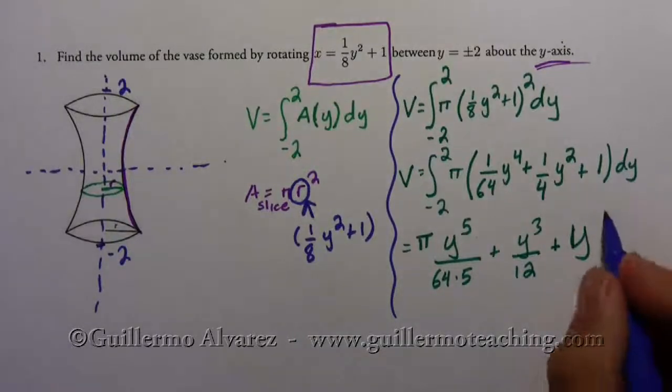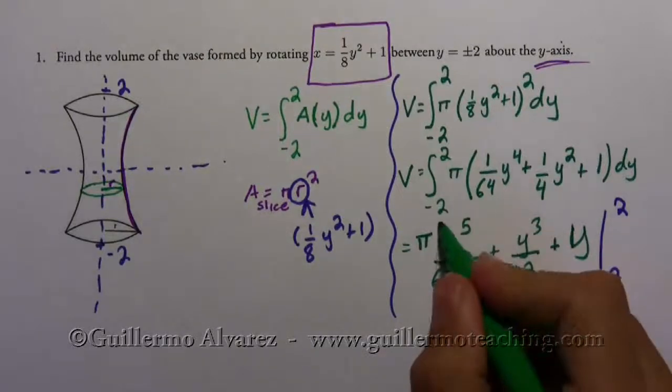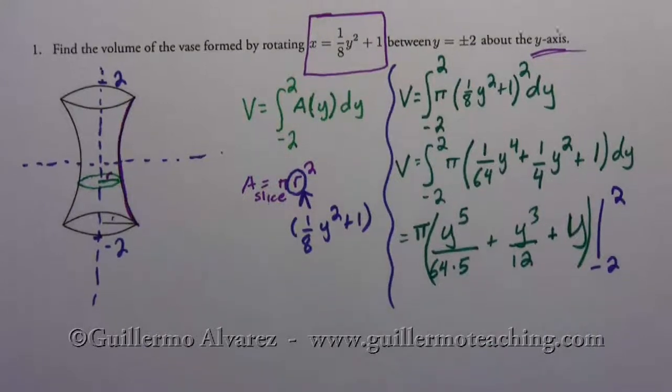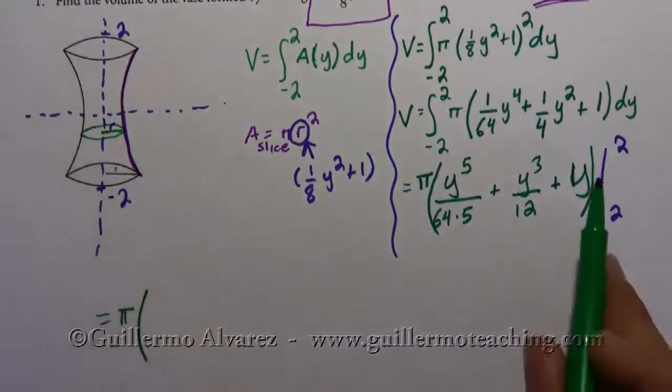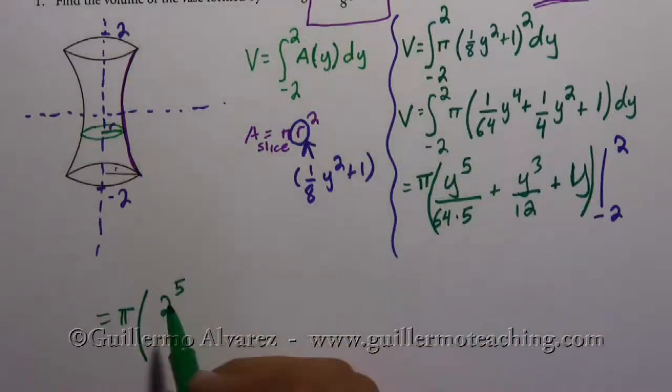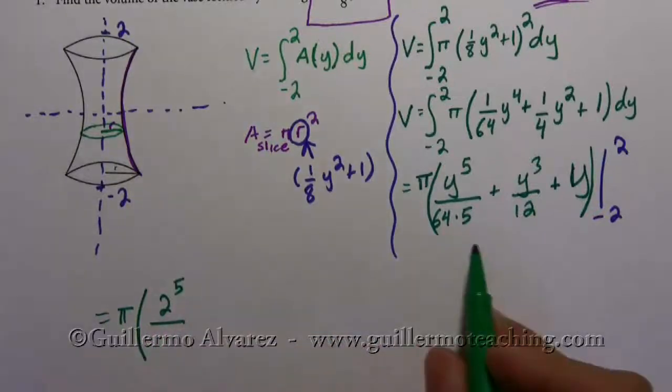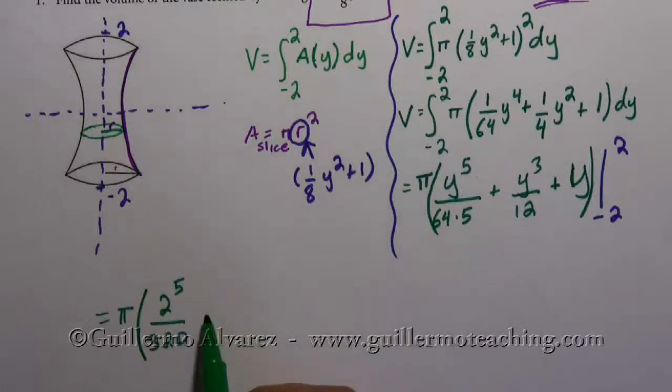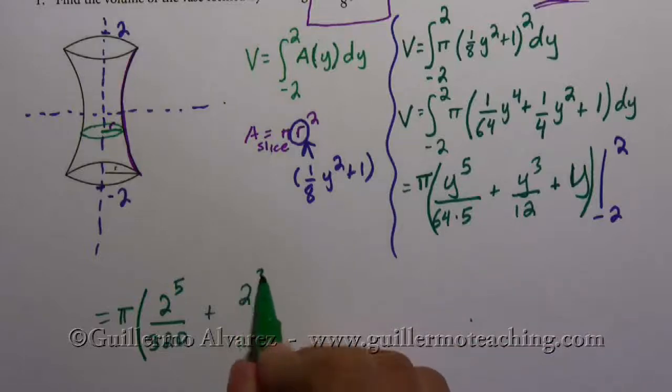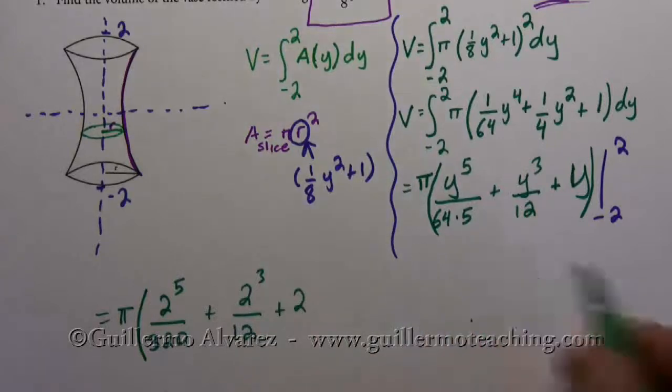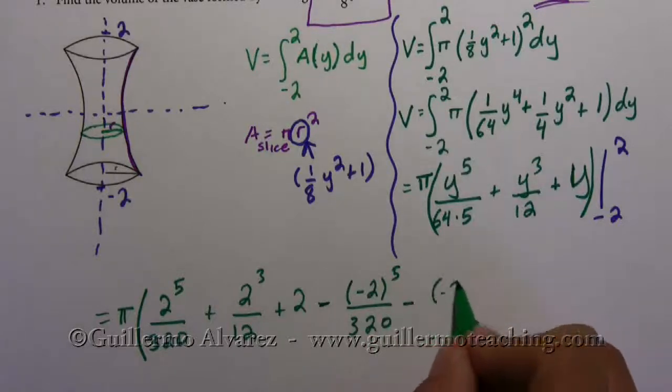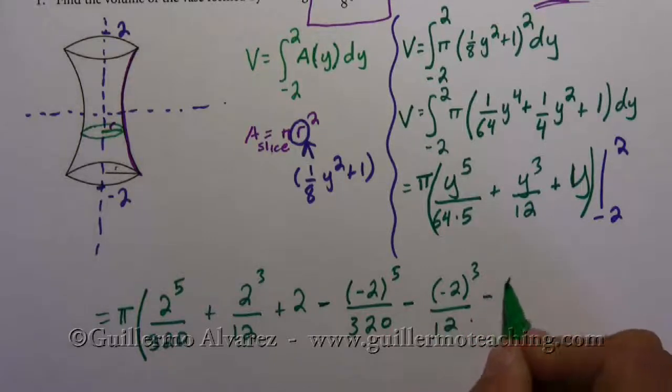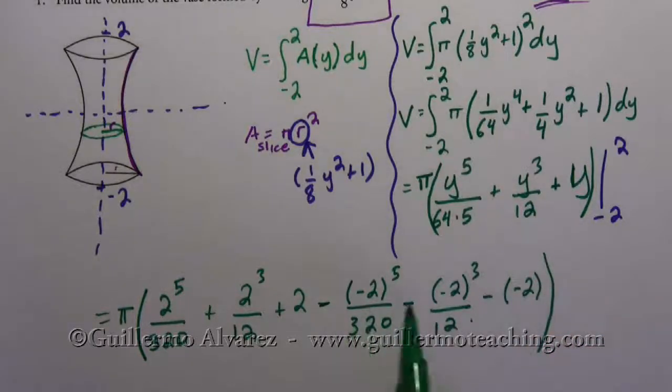Okay, so let me continue down here while I plug everything in. So I'm going to have pi times, I'm going to plug in two. This is going to be two to the fifth over three hundred and twenty, plus two to the third over twelve, plus two. And then minus negative two to the fifth over three hundred and twenty, minus negative two to the third over twelve, minus negative two. And notice all these negatives are going to turn into plus.